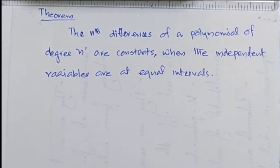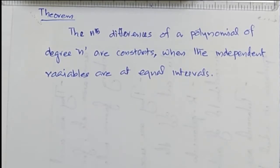Today we will think about a theorem which is very important in solving problems pertaining to the forward differences. The theorem goes like this: the nth differences of a polynomial of degree n are constants, provided the independent variables are at equal intervals. This is the theorem.